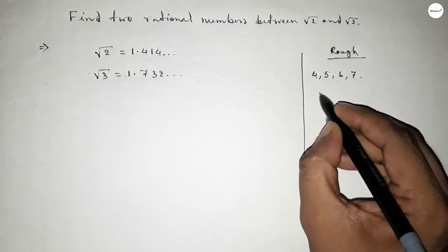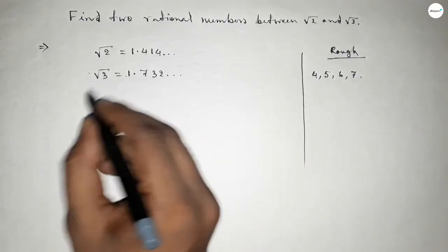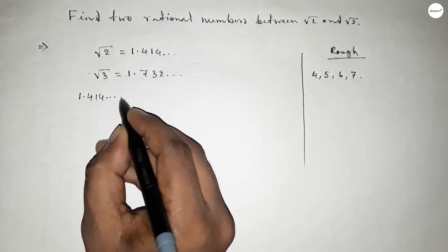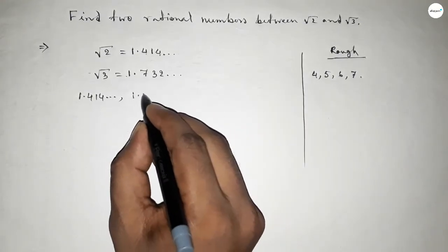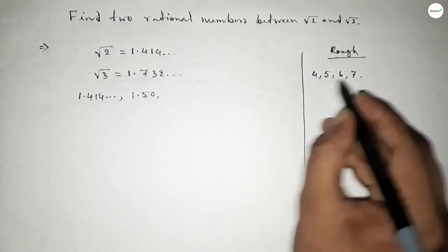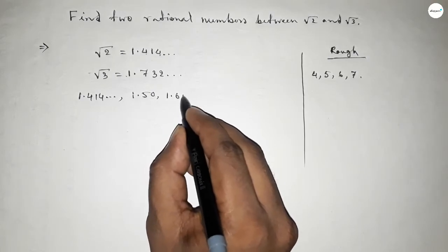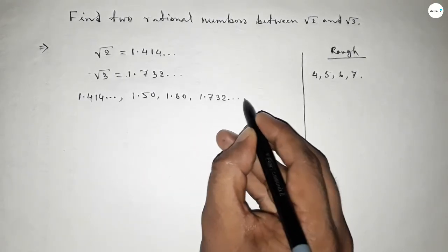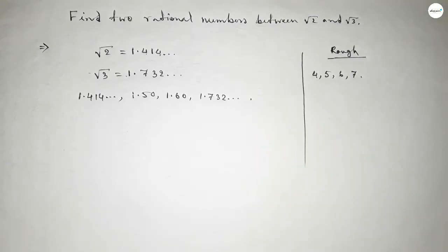So we can form by 5 and 6 two rational numbers by this way: 1.50, you can take another way, 1.60, and 1.732. These are the two rational numbers between root 2 and root 3.